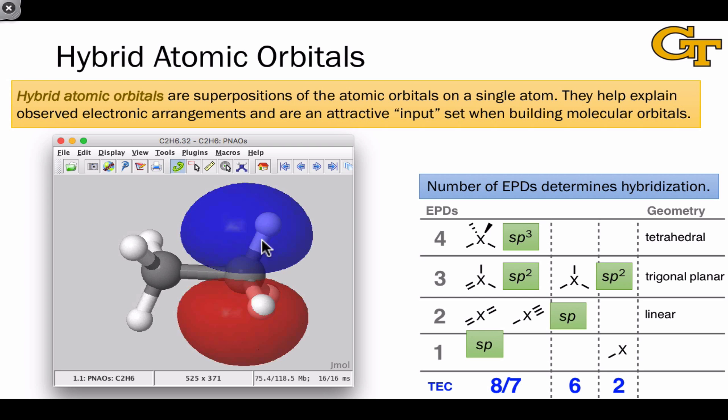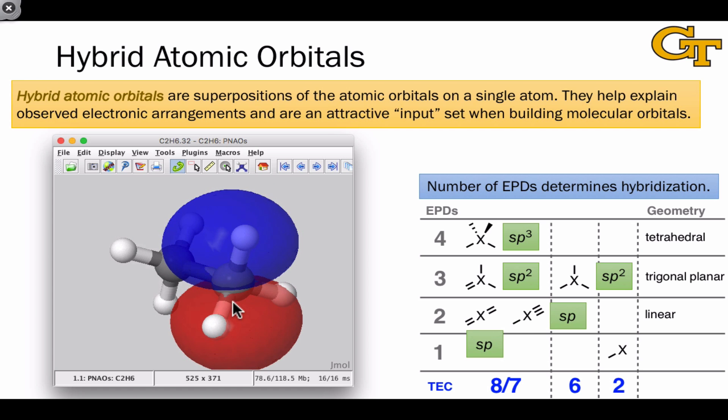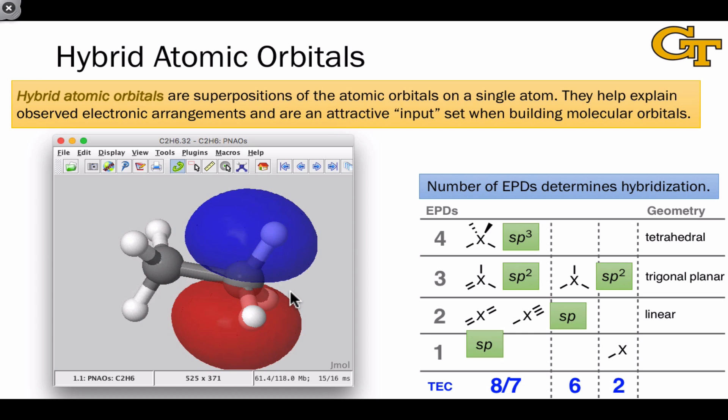For example, you can see that this p orbital isn't really well aligned to engage in bonding with either of these two hydrogens, and it's even not ideal for bonding with this hydrogen, which is at a slight angle. To account for the geometries we actually see in organic molecules, and to make localized molecular orbitals easier to build later, we use a device called the hybrid atomic orbital.